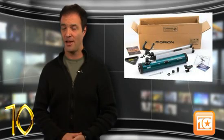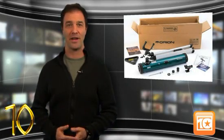Coming in at number 10 is the Orion Space Probe III. Affordability is one of this telescope's best strengths. At less than 200 bucks, it comes with everything a beginning stargazer needs, including two eyepieces, a collimation cap, and easy finder scope.